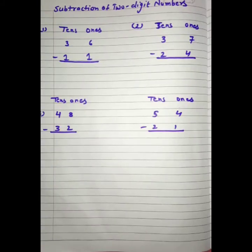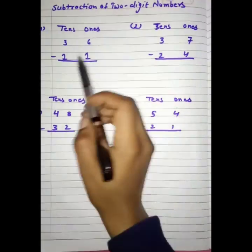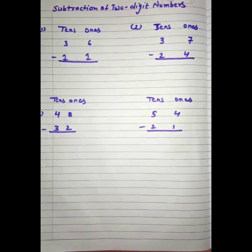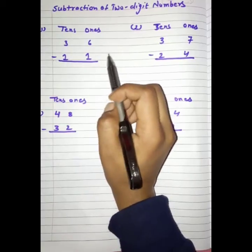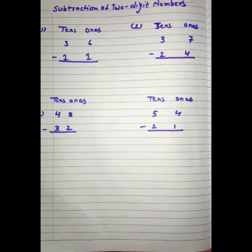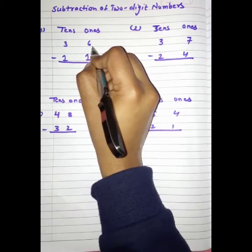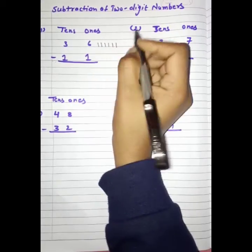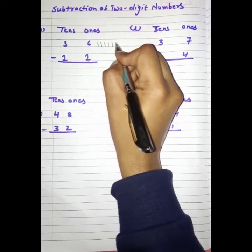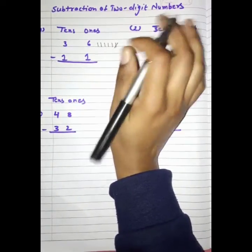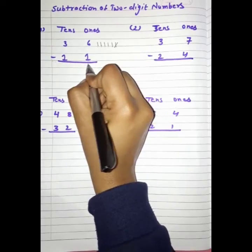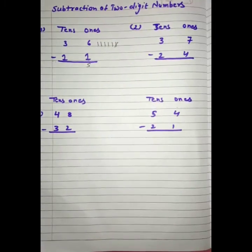So, students, ab hum karenge subtraction. See the question. Yeh subtraction ka sign hai, isse hum minus bhi kaathe hain. We have to do 6 minus 1. Hame 6 me se 1 minus karna hai. Hum addition ki tara hi isme bhi line draw karenge. 6 lines draw karenge: 1, 2, 3, 4, 5, 6. Yeh number hai 1, toh hum 1 minus kar denge. Humare paas kitnay lines bachengein: 1, 2, 3, 4, 5. We have 5. So, 6 minus 1 is equal to 5.